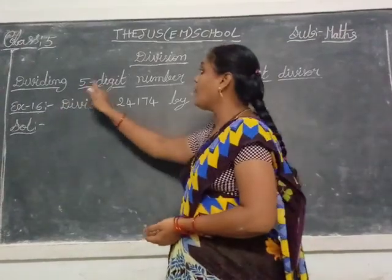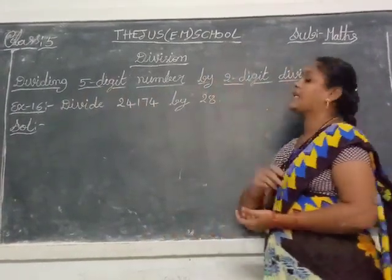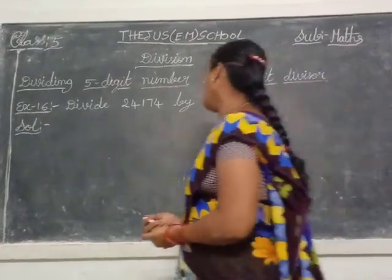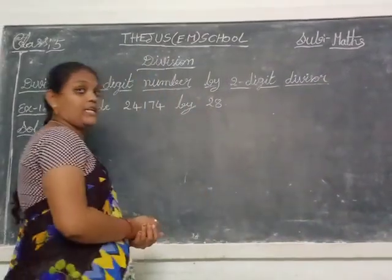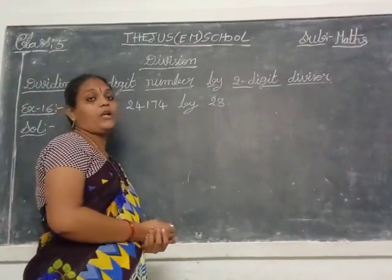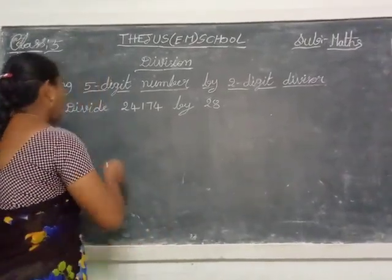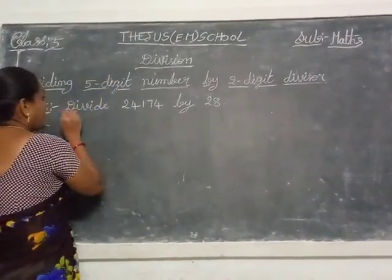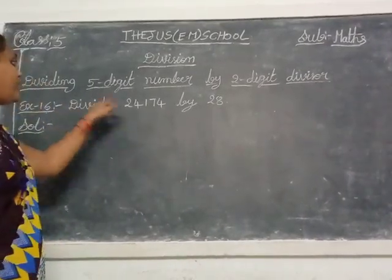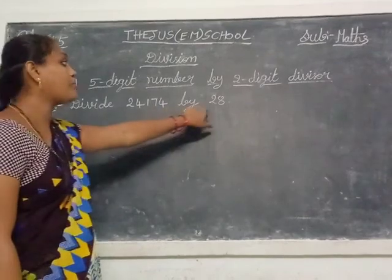Dividing a 5-digit number by a 2-digit divisor. 5-digit number by 2-digit divisor. Why are you called that divisor, children? See here. First, given in example 16: divide 24,174 by 28.